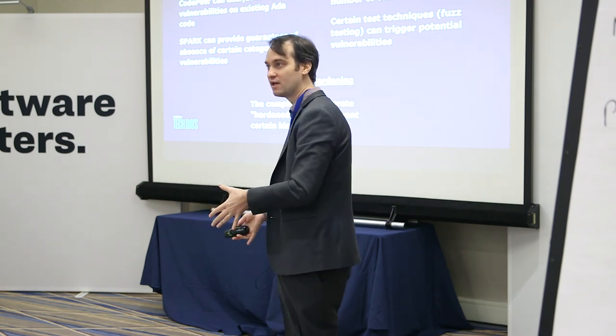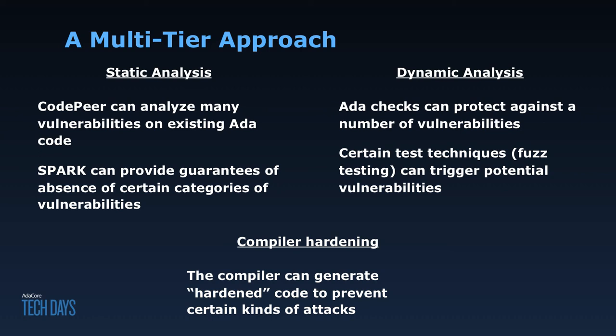Our tools take a multi-tier approach, somewhat similar to the kind of structure you'd look at coming from the safety world. The first array of tools we provide is with regards to static analysis — the idea is to identify threats very early on in the process, even before the testing phase, and remove some of those. There are two categories of static analysis tools we provide: the first one finds problems for you, and the second one guarantees that the source code is free of certain kinds of problems.